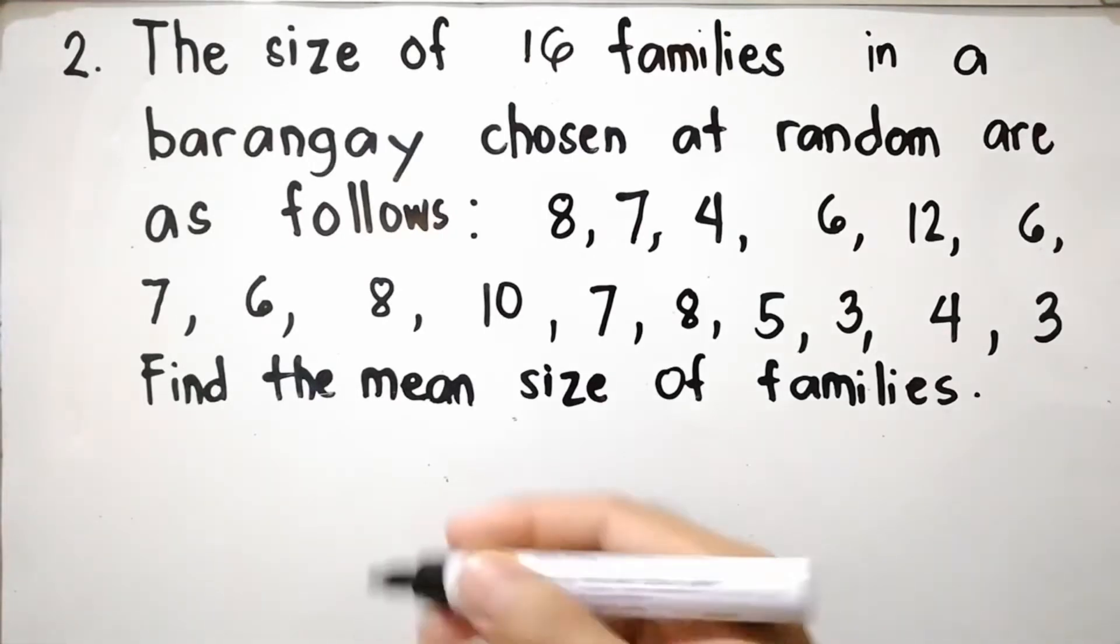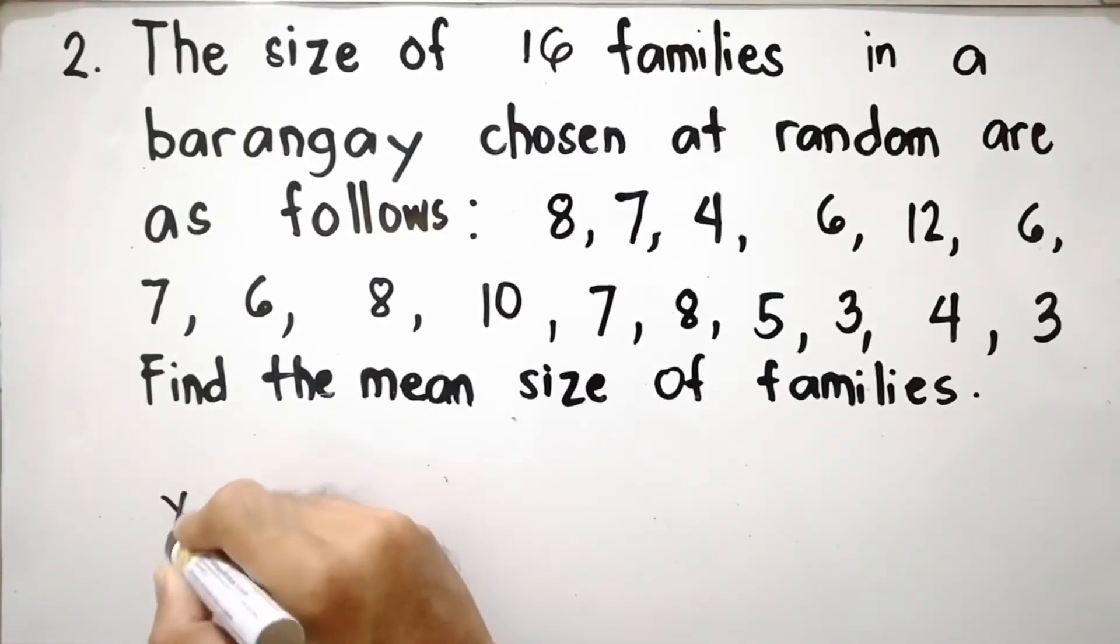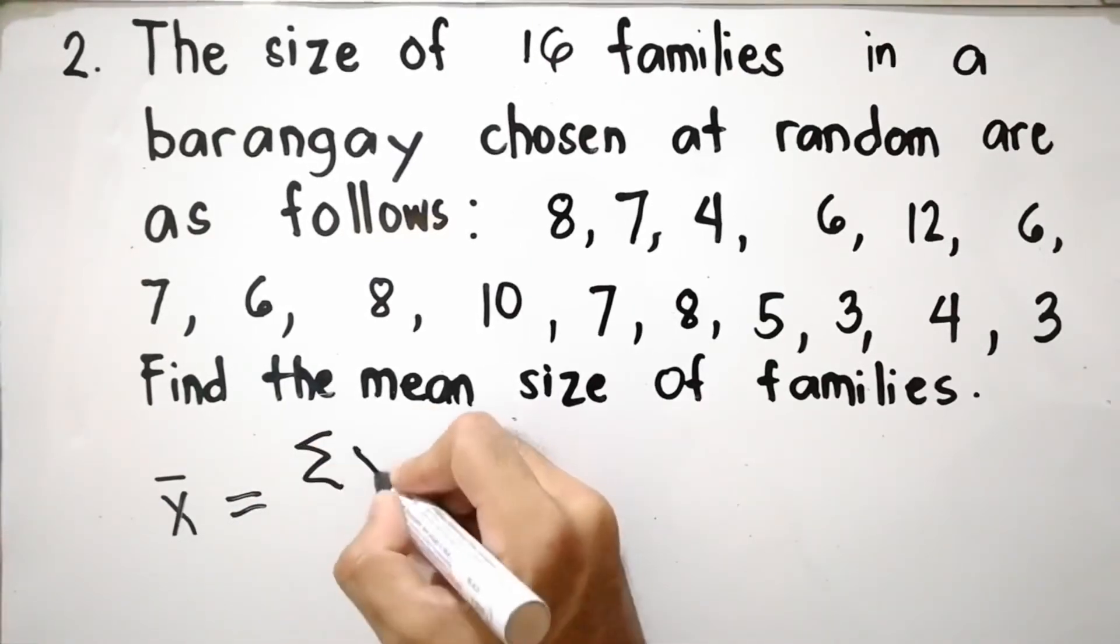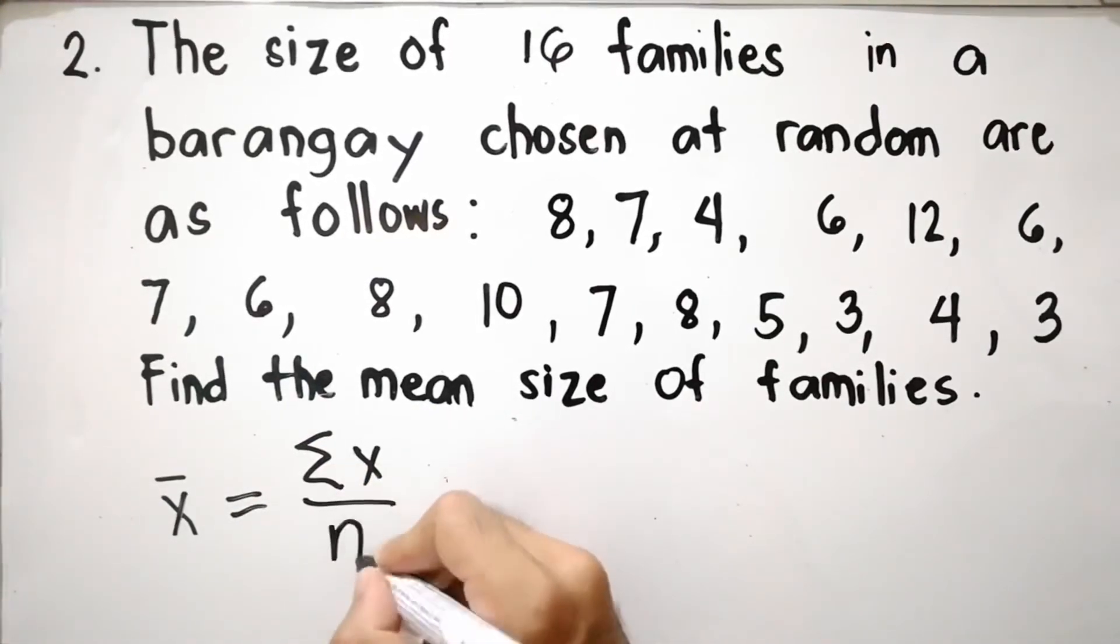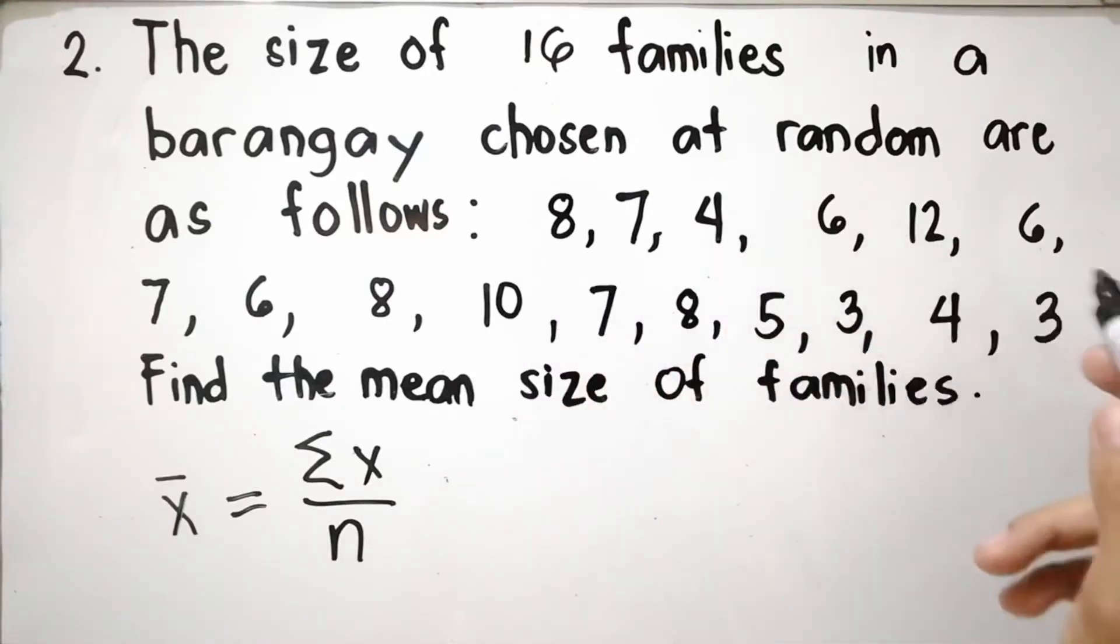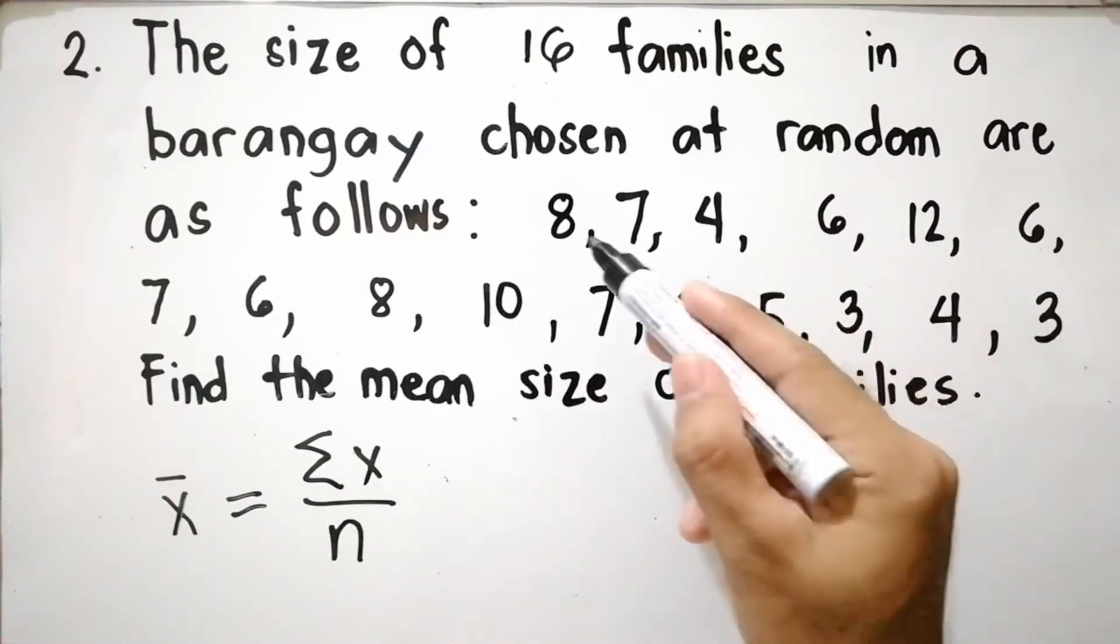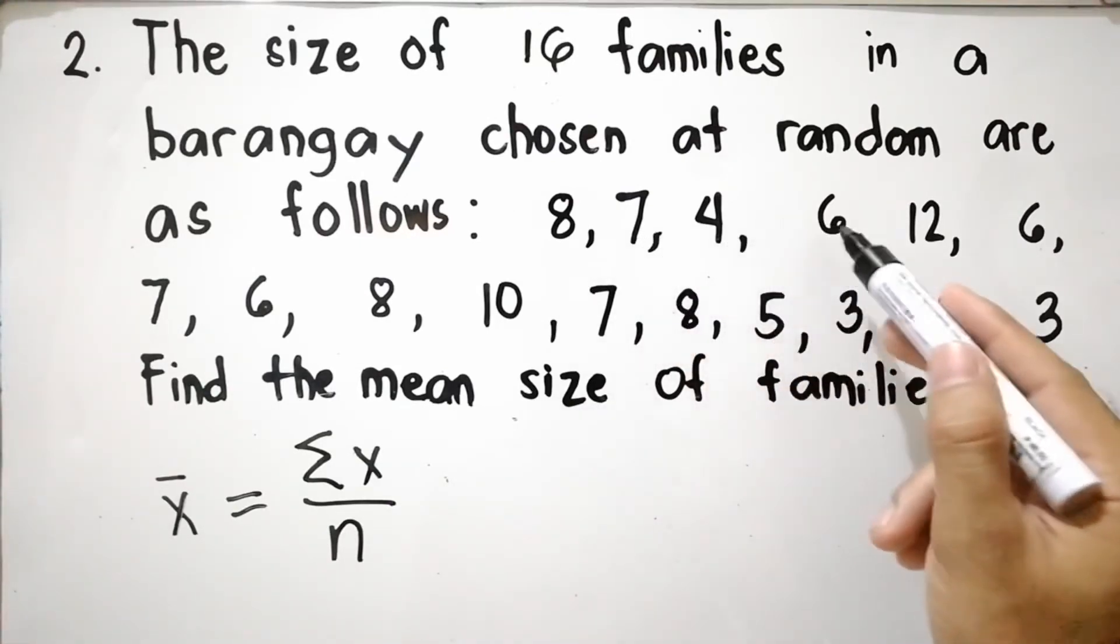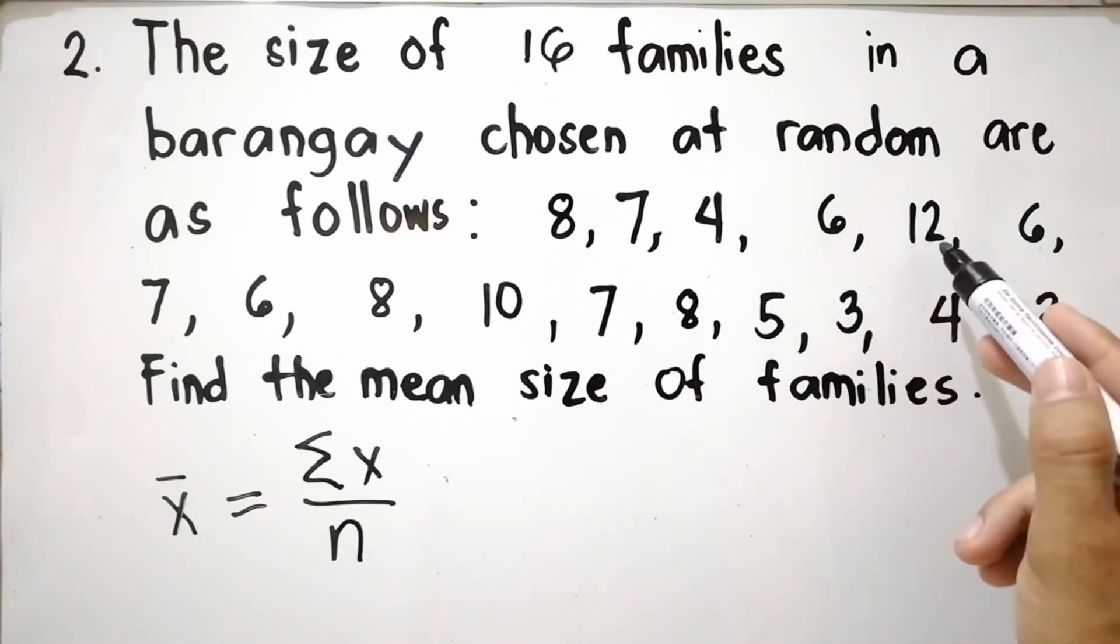Mean is denoted as x bar. That is equal to summation of x all over n. Summation of x means we need to add all the size of the families. 8 plus 7 equals 15, plus 4 equals 19, plus 6 equals 25, plus 12 equals 37.